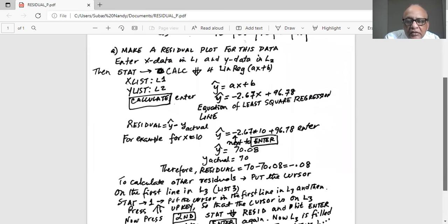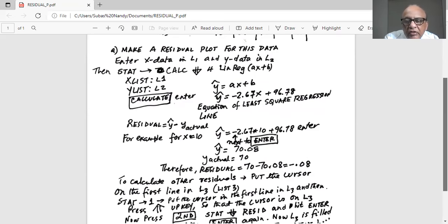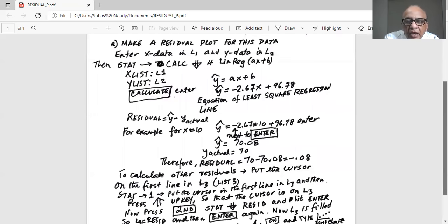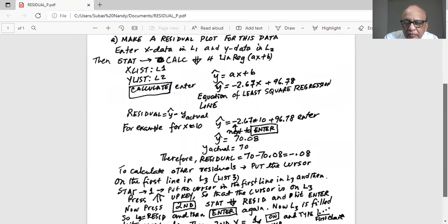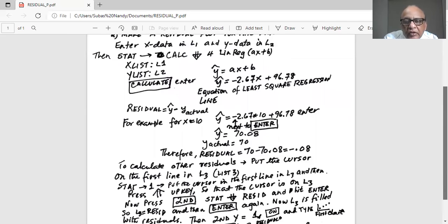To calculate other residual, put the cursor on the first line in L3. So you do stat 1, then put your cursor on the first line in L3. And then press the up cursor button so that the cursor is on L3. Cursor is now sitting on the place where L3 is written. Then press second button, then stat.